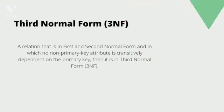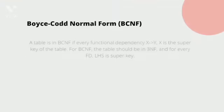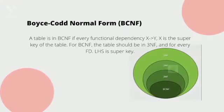The final form is BCNF, the Boyce-Codd Normal Form. It states that for any functional dependency X to Y, X should be a super key. Since our relation is already in 1NF, 2NF, and 3NF, it is also in BCNF.